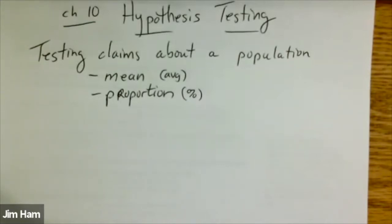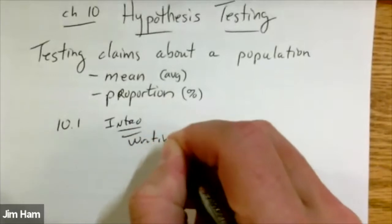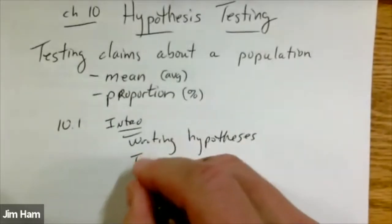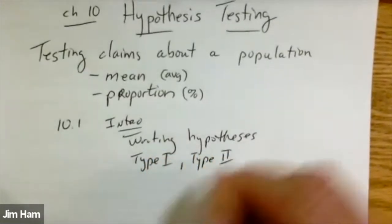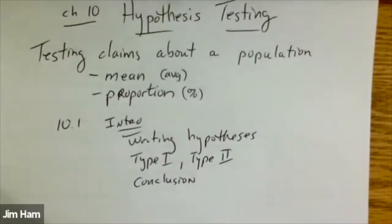Here's how the process is going to work. It's going to be a five-step process. If you can go through these five steps, you will have the information that you need to test a claim. In section 10.1, you get the intro — writing hypotheses, something about type 1 and type 2 errors, and interpreting the results, that is, stating a conclusion. Section 10.2 is devoted only to population proportion claims, and section 10.3 will be testing claims about population means.